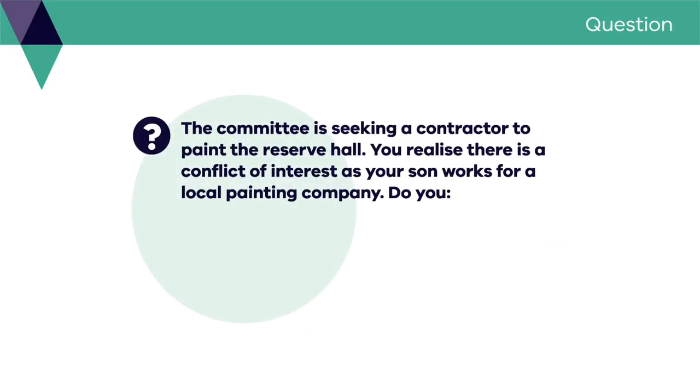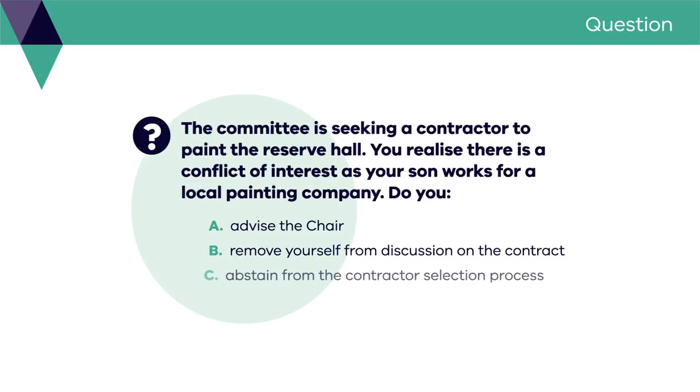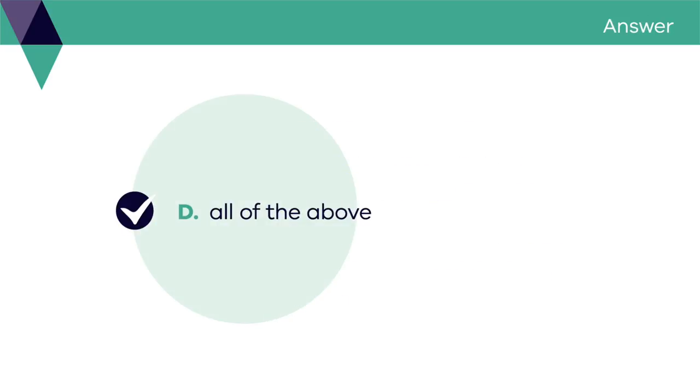The committee is seeking a contractor to paint the reserve hall. You realise there is a conflict of interest as your son works for a local painting company. Do you: a) advise the chair? b) remove yourself from discussion on the contract? c) abstain from the contractor selection process? d) all of the above? D, all of the above.